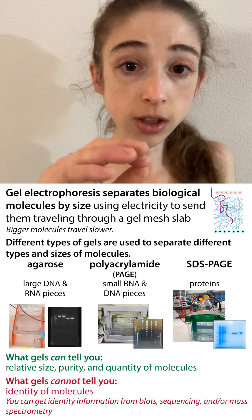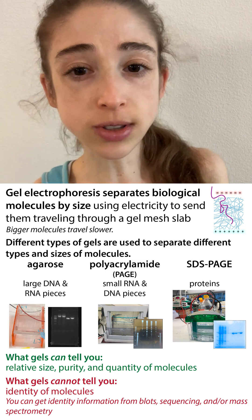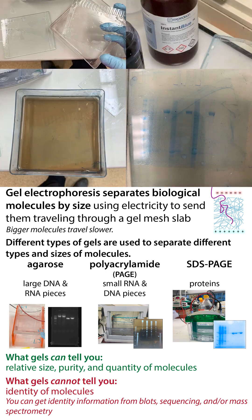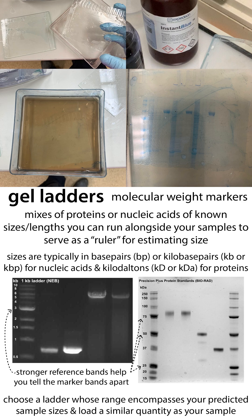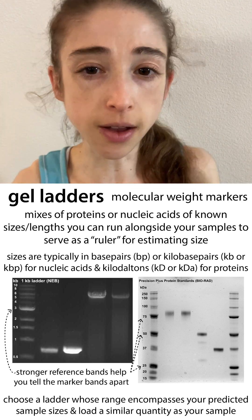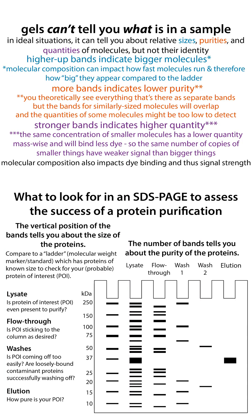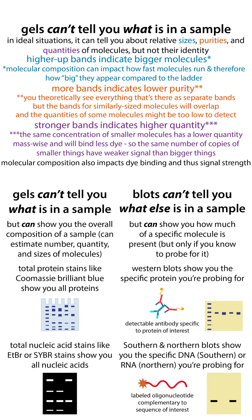When you stop the electricity, the molecules are where they are in the gel, and then you can use some sort of stain in order to see the molecules. It'll tell you the size of the molecules in terms of their molecular weight — compare where they are to the bands of a known standard. That gives you an idea of the rough size of the molecule. You can also see how many molecules there are, so then we get into thinking about purity. Those are the types of things you can get from a gel.